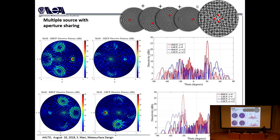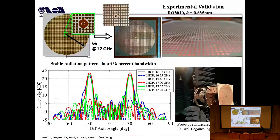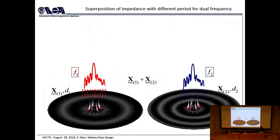What you do is design the impedance for one beam, design the impedance for the other beam, superimpose the two mathematically, then apply optimization. This gives a beam for each point source and works quite well. The aperture efficiency is not as high as for a single beam due to coupling between beams, but it is much better than the rudimentary aperture-partitioning approach. Multiple point sources can also be used — exciting different beams in different directions with each source. These are experimental validations by David González.